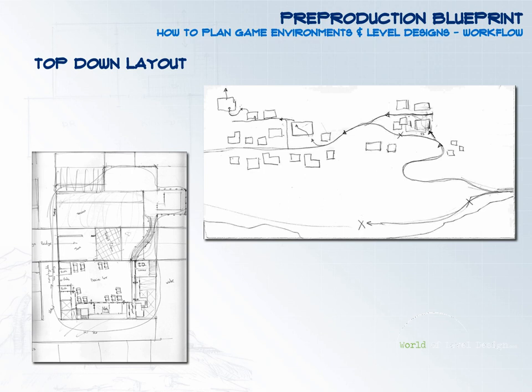The depth of your top-down layout will be determined by whether you are creating a single player, multiplayer, or standalone game environment. For a multiplayer map, you focus on spawn points, the layout of the world, choke points, and objectives. For a single player map, you focus on player paths, objectives, where AI and obstacles will happen, where you want the story to unfold, and where cinematics will appear and at which point in the map.